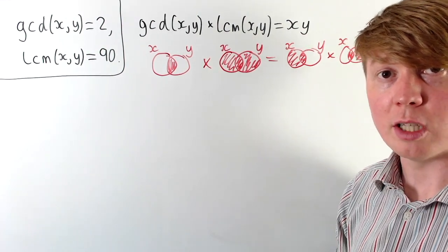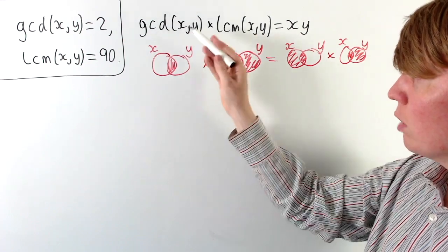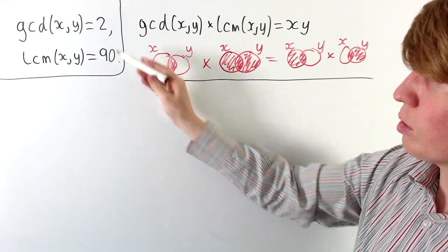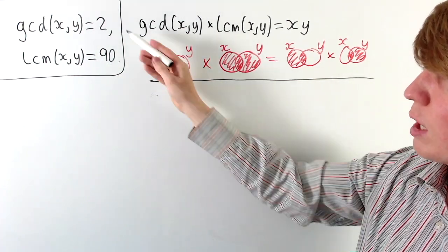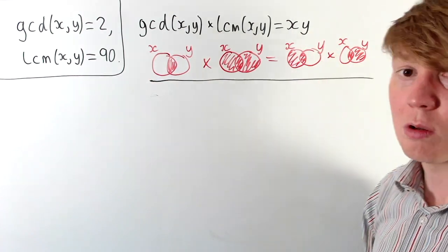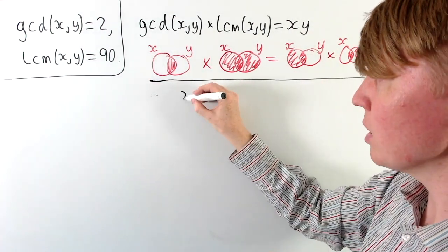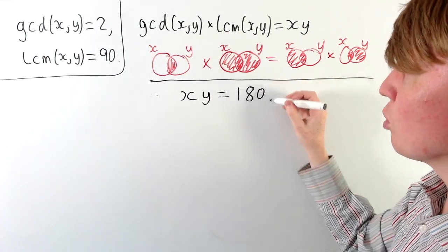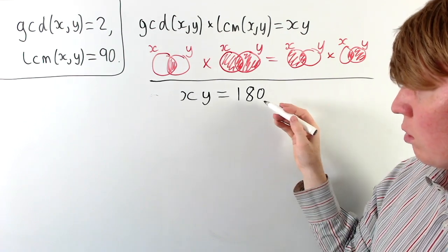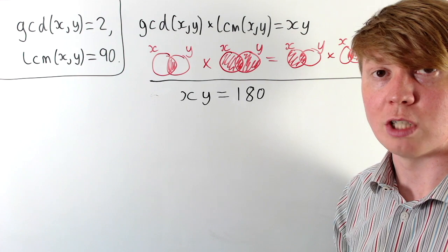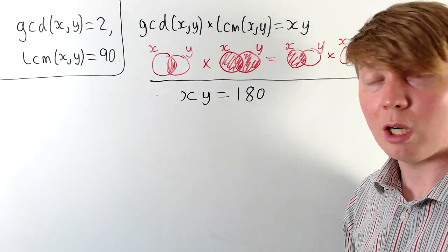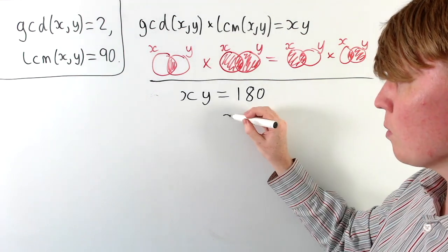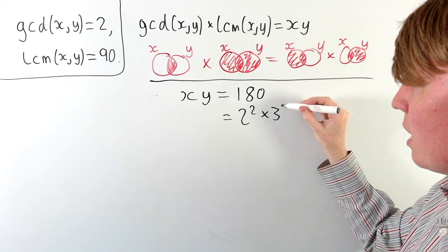A more formal proof will be included in the description. This result is really useful: for this first example, the product of the GCD and LCM must equal 2 times 90, which also equals x times y. So we're limited to factor pairs of 180. Rather than listing all positive integer factor pairs of 180, which could get long for larger numbers, we can think more carefully using the prime factorisation of 180.